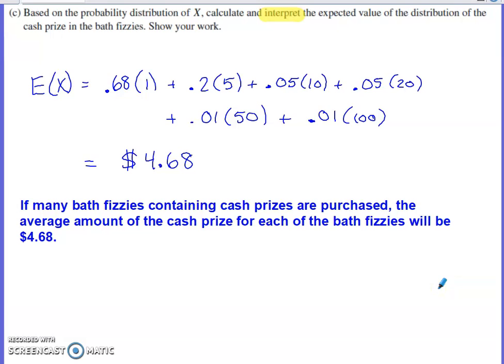So what is the interpretation of that? The interpretation of an expected value is that if whatever the event was, if it was repeated over and over and over again many, many, many times. Notice how that's how I started my interpretation. If many bath fizzies containing cash prizes are purchased, the average amount of the cash prize for each of the bath fizzies will be $4.68.